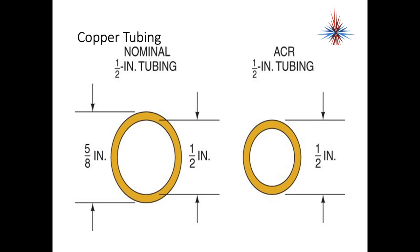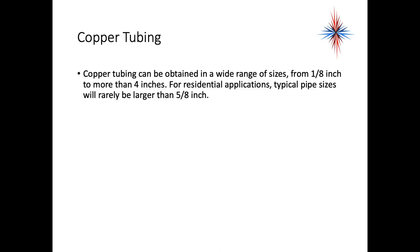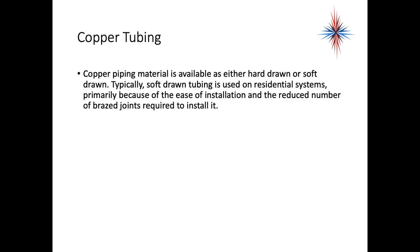Copper tubing can be obtained in a wide range of sizes, from an eighth inch to more than four inches. For residential applications, typical pipe sizes will rarely be larger than five-eighths inch.